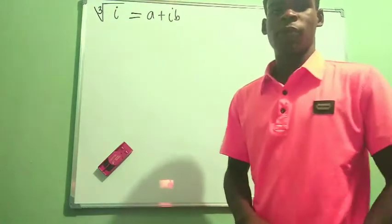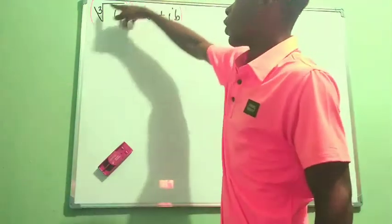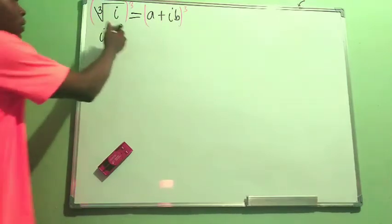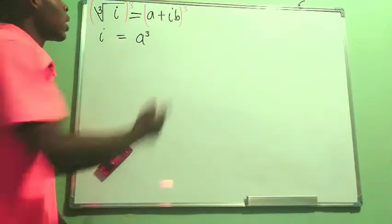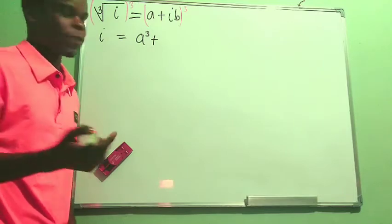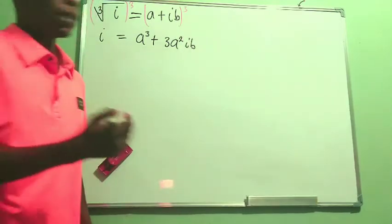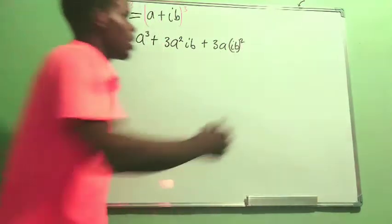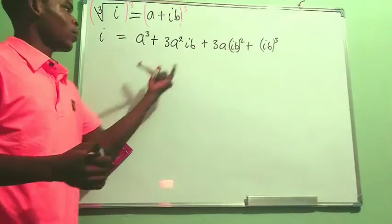To actually solve this, I'm going to raise both sides to the power of three. The cube will cancel the cube root, and we'll have i on the left-hand side. On the right-hand side we expand using a binomial expansion: a cubed, plus 3a²(ib), plus 3a(ib)², plus (ib)³.